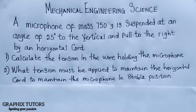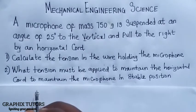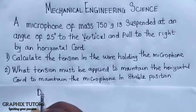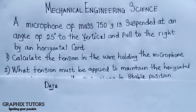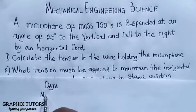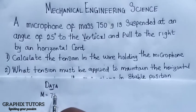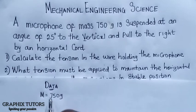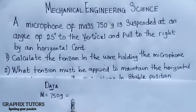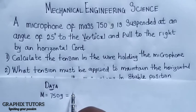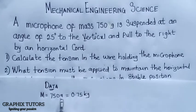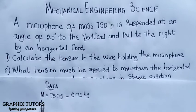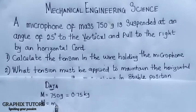Now what we are looking for — we know the data given. The first piece of data is the mass, and the mass of the microphone is given as 750 grams. Converting to kilograms we divide by 1000, which gives us 0.75 kilograms. Now if I want to convert this mass into a weight, weight is equal to mass times gravity.